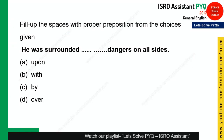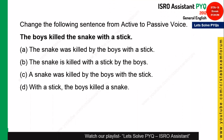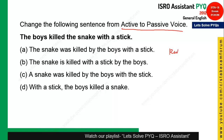The next question: 'He was surrounded ___ dangers on all sides.' The correct preposition is 'by'. He was surrounded by dangers on all sides. Option C is the right answer.